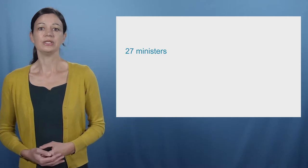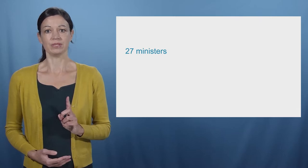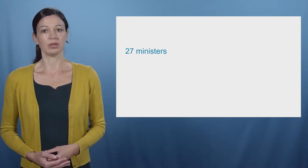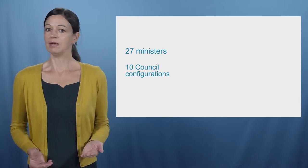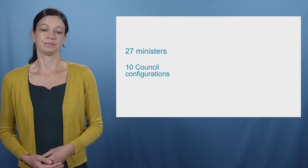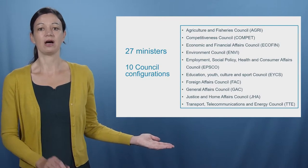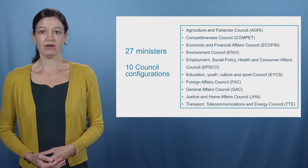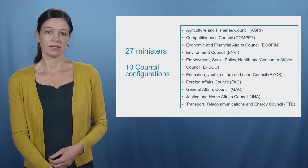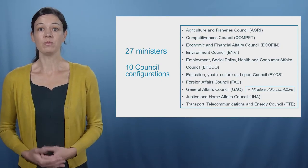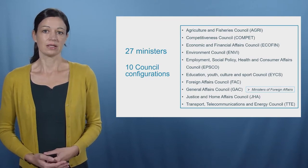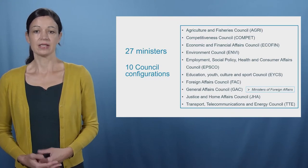The Council of the European Union consists of 27 ministers, one per EU member state. Depending on the topic under discussion, different member state ministers convene to discuss policy matters pertaining to their responsibility. For example, in the Environment Council, the Ministers of Environmental Affairs of the 27 member states come together. In total, there are 10 different Council configurations. The General Affairs Council is one exception to the otherwise subject-specific Council formations — it deals with matters that affect more than one policy and prepares the European Council meetings. It is the foreign ministers, and sometimes the ministers for European affairs, that belong to this formation.